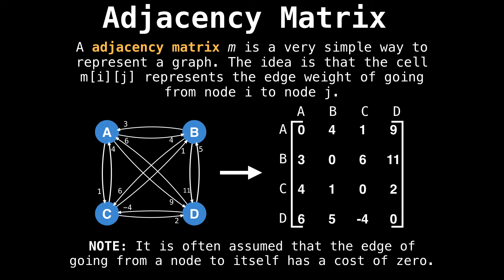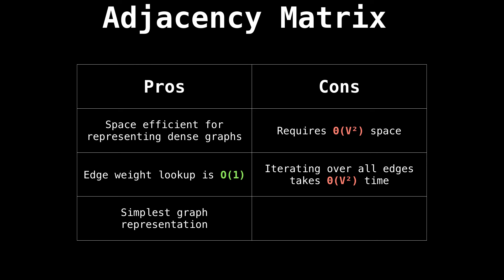The simplest way is inside a 2D adjacency matrix. The idea is that the cell M[i][j] represents the edge weight of going from node i to node j. So in the graph below, there are four nodes, so I create a four by four matrix and populate the graph with the edge weights. If you look at the edge weight from node C to node D, you'll see that it has an edge weight of two. So in row three and column four of the matrix, there is a value of two. Note that it is often assumed that the edge of going from a node to itself has a cost of zero, which is why the diagonal of the matrix has all zero values.